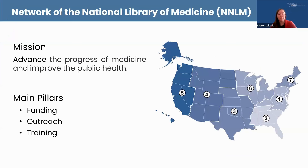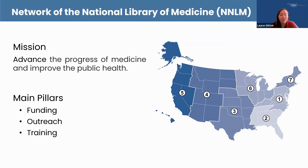Since some of you are first-time attendees at an NNLM webinar, I want to provide a brief overview of what our organization does. NNLM has seven regions across the country covering territories in all 50 states. Our guiding mission is to advance the progress of medicine and improve public health by providing all U.S. health professionals with equal access to biomedical information and improving the public's access to information to enable them to make informed decisions about their health. Regionally, we collaborate with various organizations including public and academic libraries, schools, hospitals, and community-based organizations. Our efforts are primarily conducted through three main methods: providing funding, conducting outreach, and training like today's webinar.